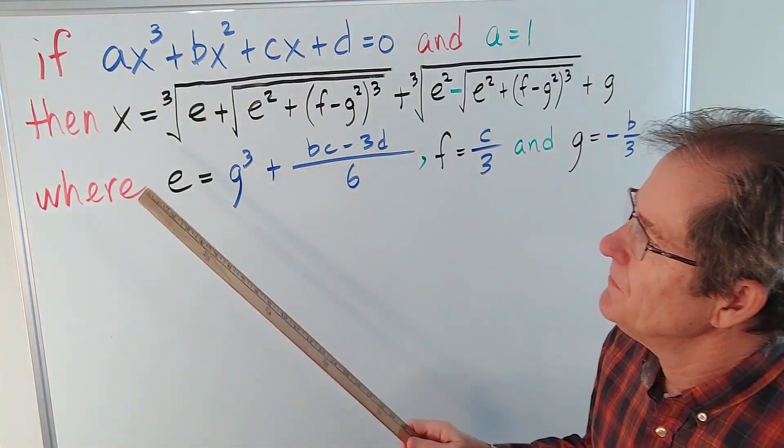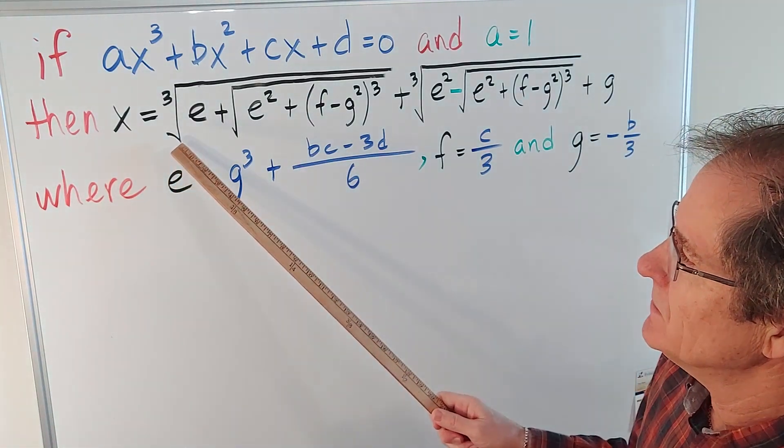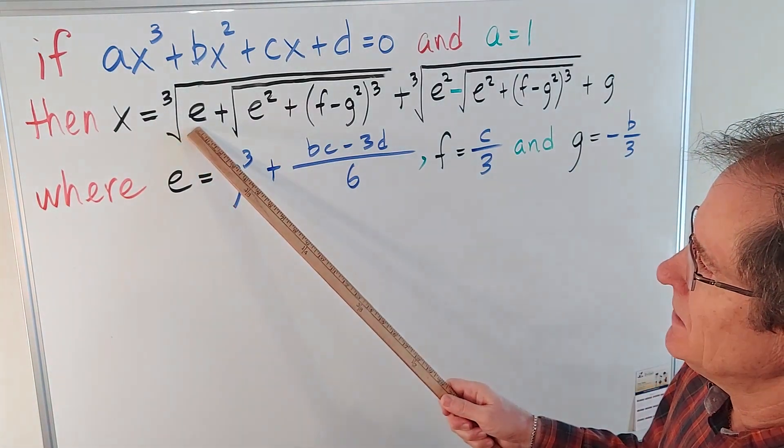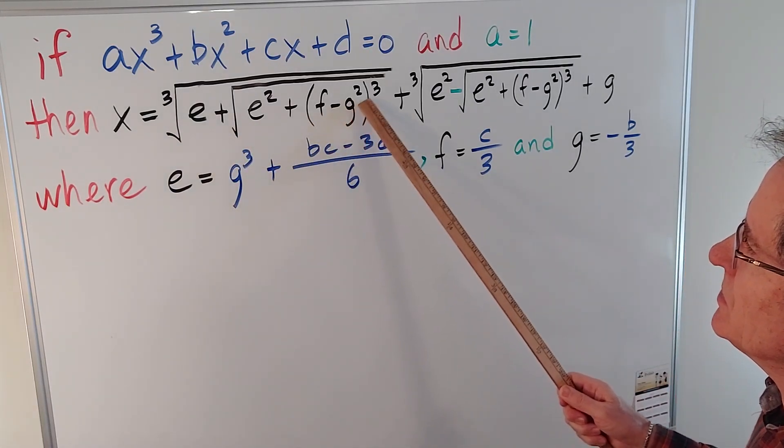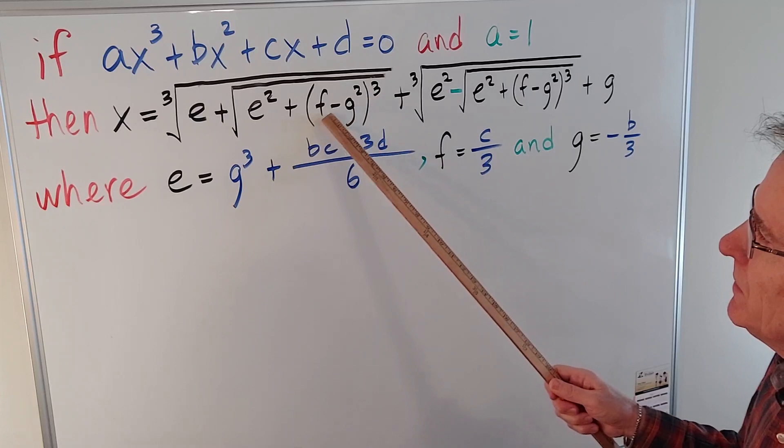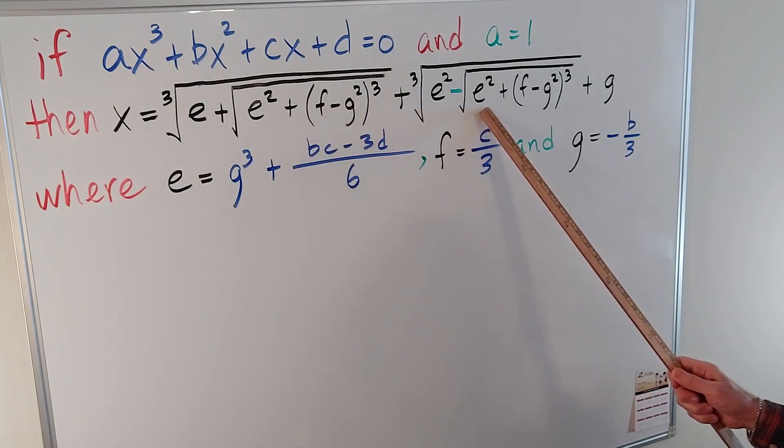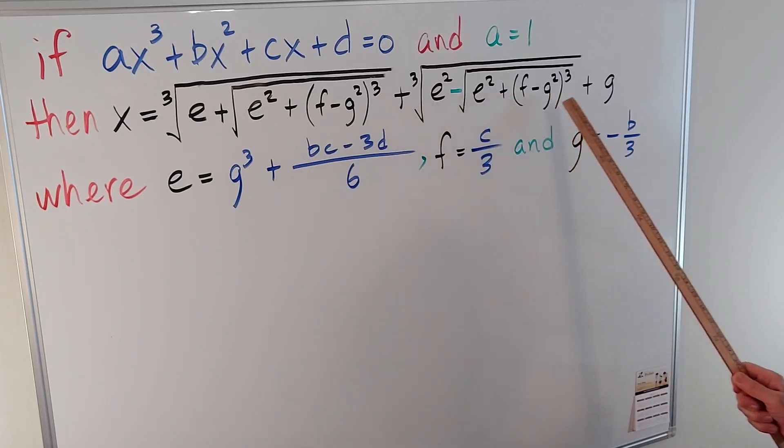In that case, the solutions are x equals, and this looks awfully complicated, the cubed root of e, which I'll explain later, plus the square root of e squared plus f minus g squared, quantity cubed, and I'll explain f and g in a minute, plus the same thing with one difference. Do you see it? Yep, there's a minus sign there, plus g.